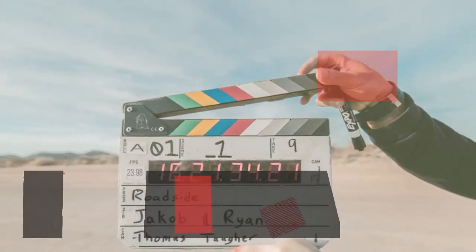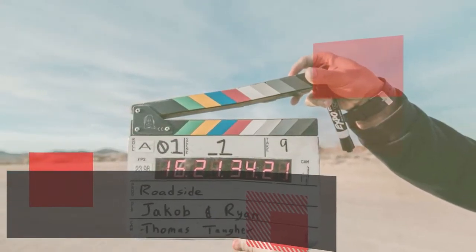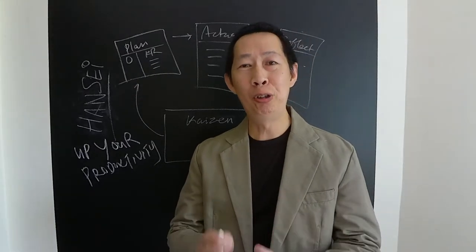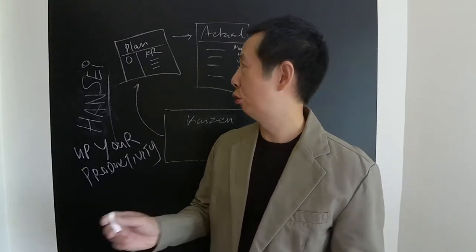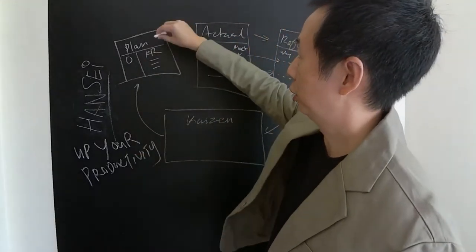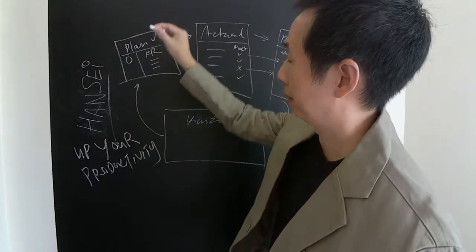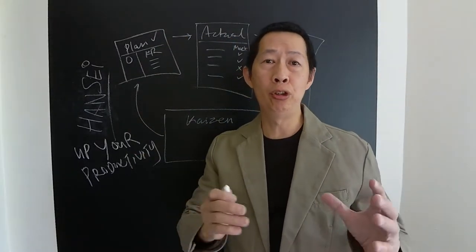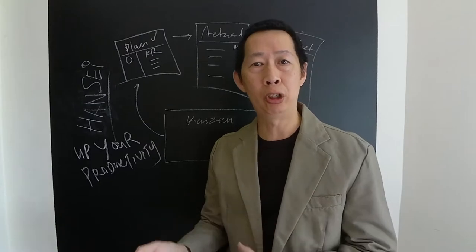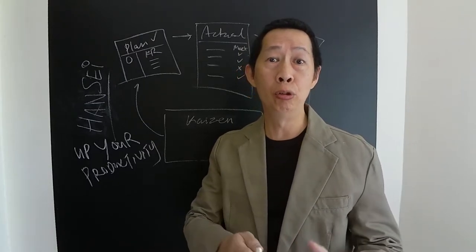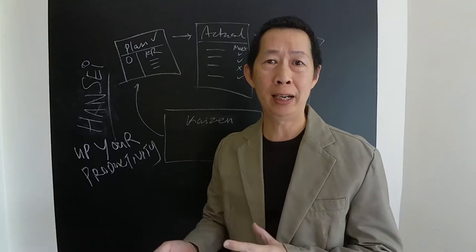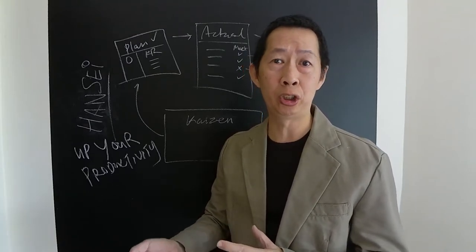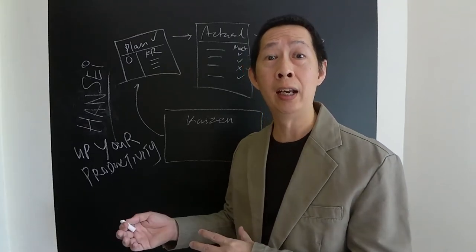So how do we do the Hansei process? First, you need to plan. You can use a normal SMART goal-setting approach, or the most popular one right now — used by organizations like Google — called OKR.